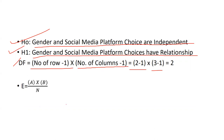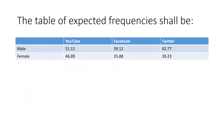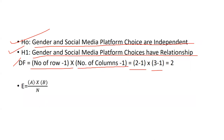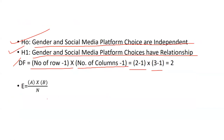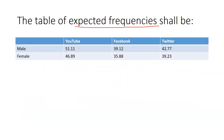Now we will calculate the expected frequency. We already have the observed frequency, but now we need the expected frequency. The formula is: expected frequency = (row total × column total) divided by n, the overall total. For each cell, multiply the corresponding row total by the column total and divide by 255. So we get: male YouTube 51.11, female YouTube 46.89, male Facebook 39.12, female Facebook 35.88, male Twitter 42.77.